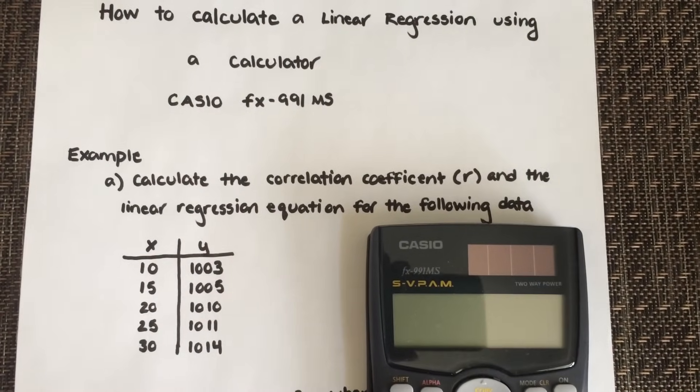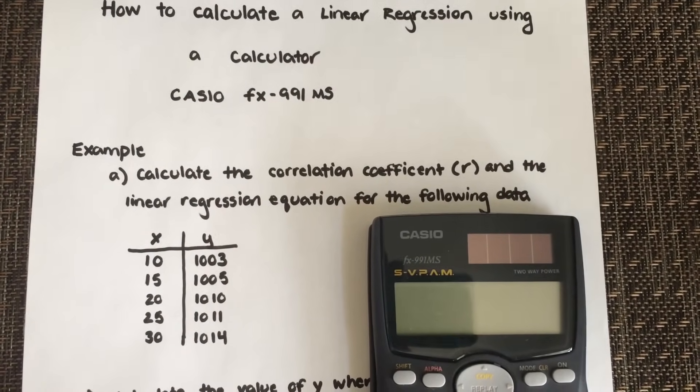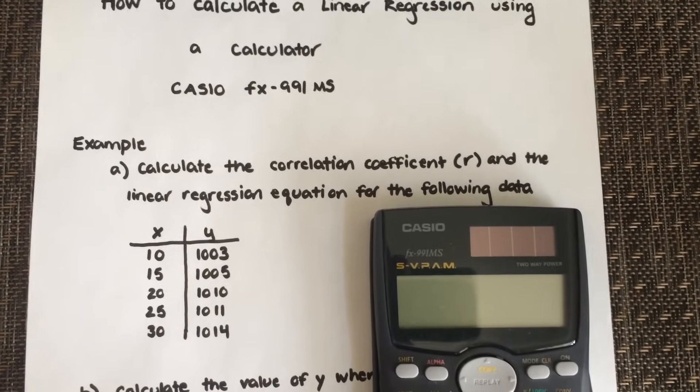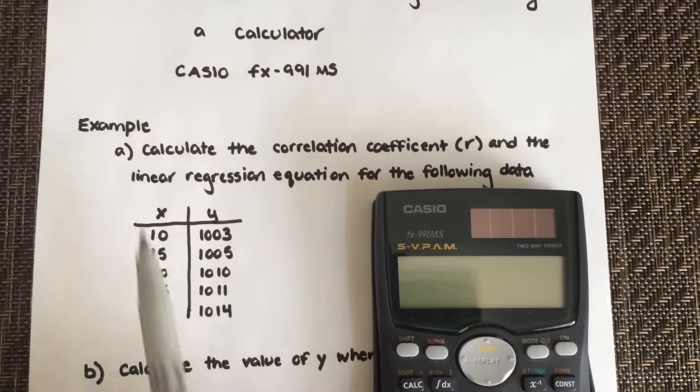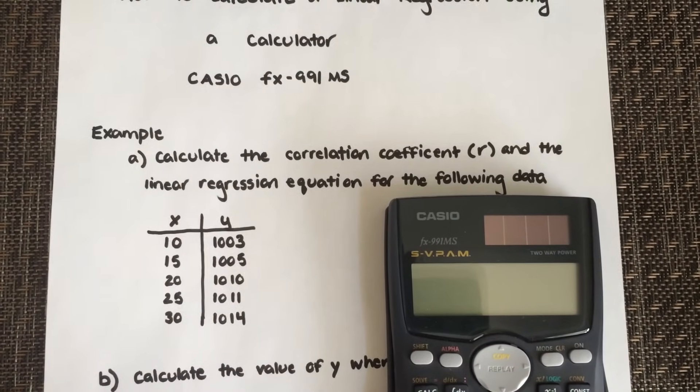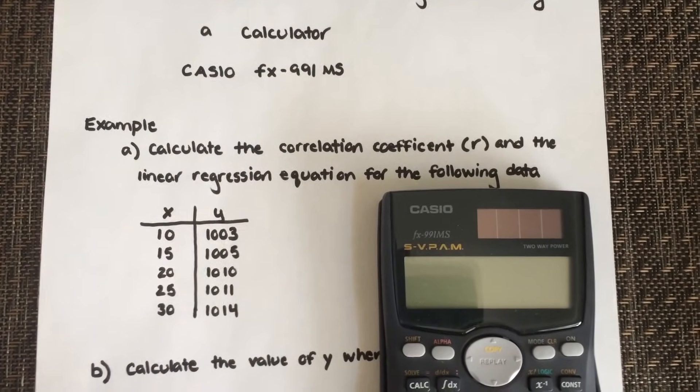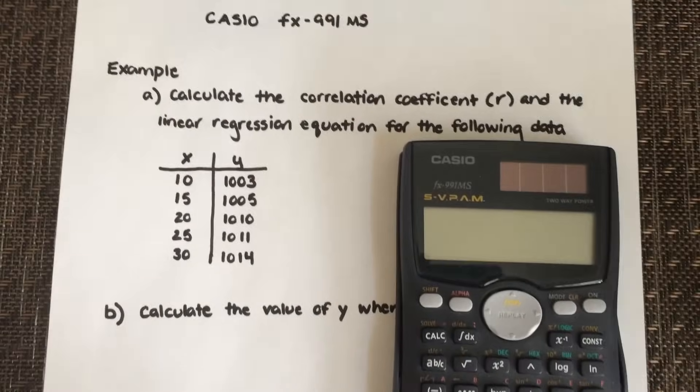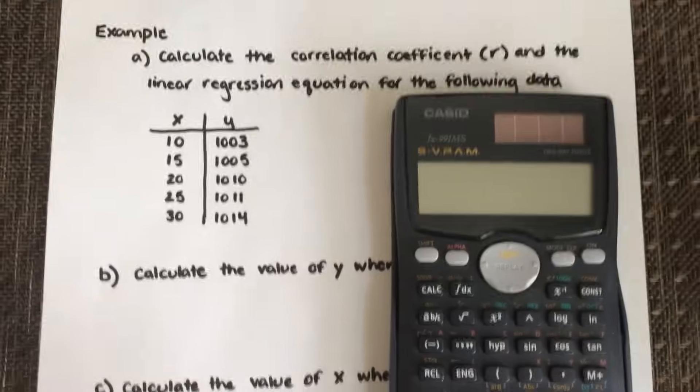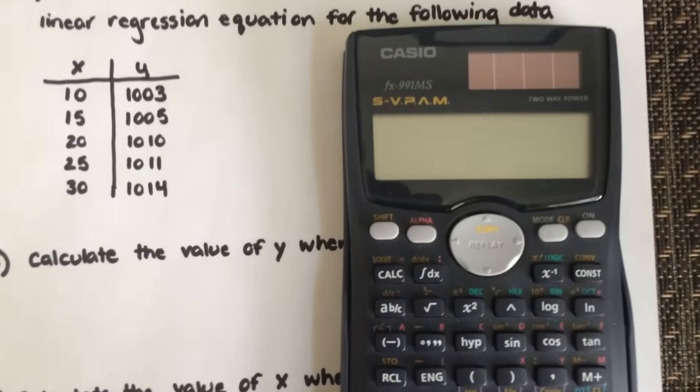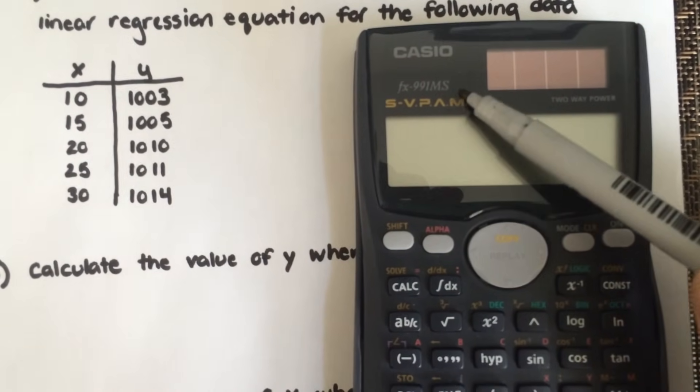How to calculate a linear regression using a calculator, the Casio FX991MS. The example I'm going to show you is how to calculate a correlation coefficient R and the linear regression for the following data. The data is listed here, X and the Y values, using the calculator Casio FX991MS.